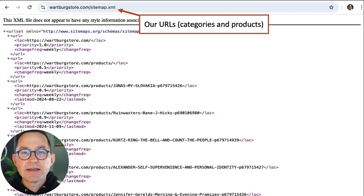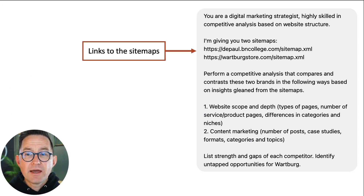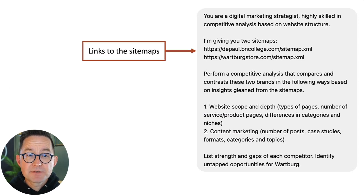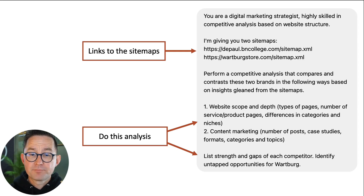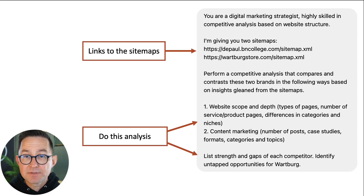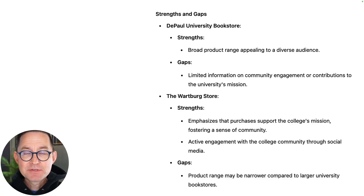Let's give these to AI and ask it to do some analysis. Here are the links to the sitemaps. I want you to conduct an analysis of the website's scope and depth, types of pages, number of product pages, differences in product categories, niches, and content marketing. List the strengths and gaps of these two websites and list untapped opportunities for us. Based on the inputs, AI then summarizes the strengths and gaps of these two brands compared to each other. It can see the URLs and the types of pages in the sitemap.